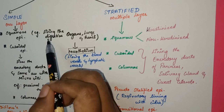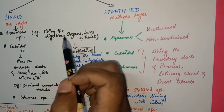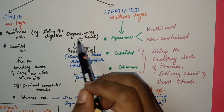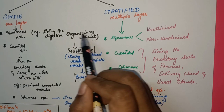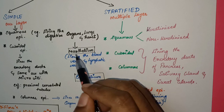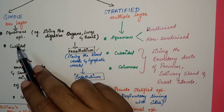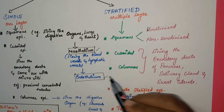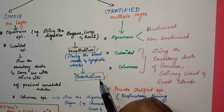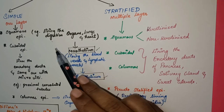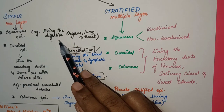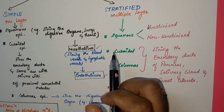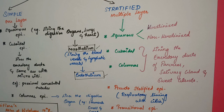Simple squamous epithelium can be seen lining the digestive organs. When it lines systemic organs such as the lungs and heart, it is called mesothelium. When squamous epithelium lines blood vessels and lymphatic vessels, it is called endothelium. So the two sub-variants are mesothelium — lining specific systemic organs — and endothelium — lining blood vessels and lymphatic vessels.